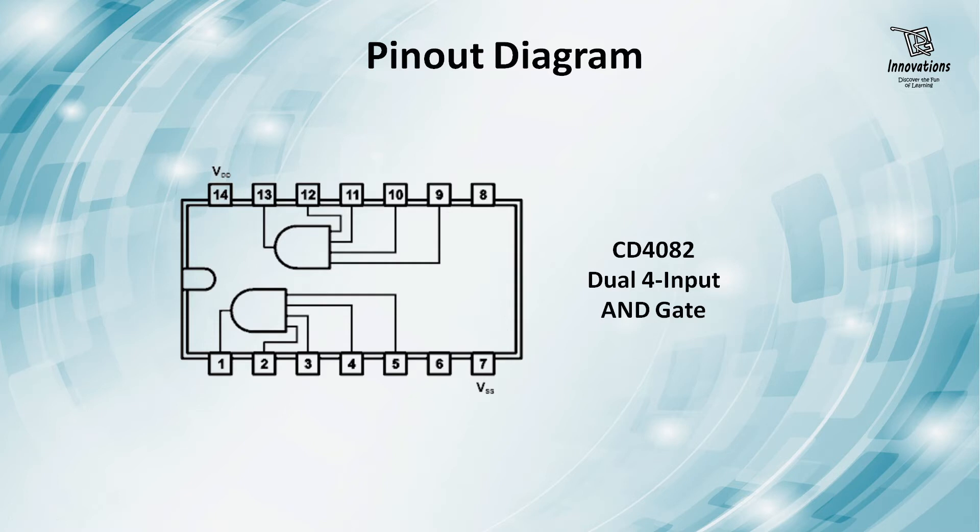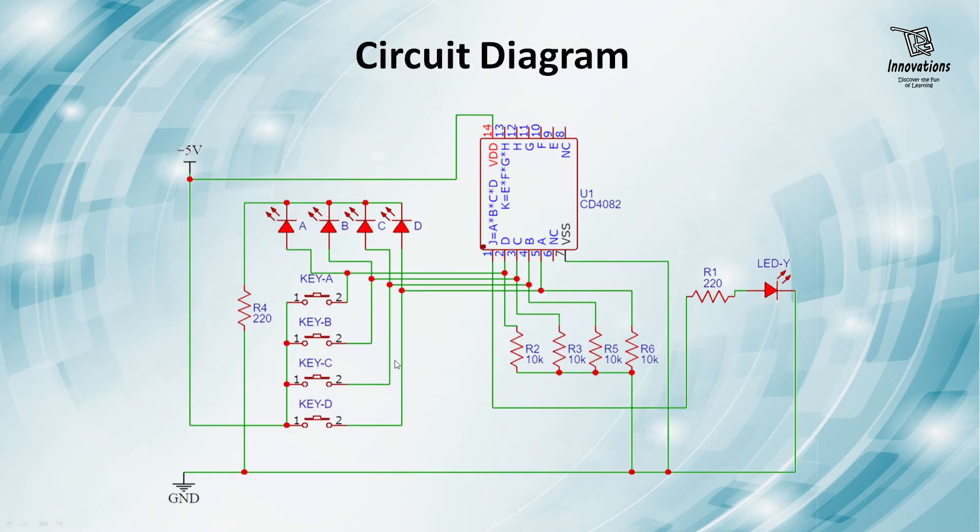So let us see the circuit diagram. This is the circuit diagram that we are going to implement where we are using the IC CD4082. And we will only see the first segment of the AND gate IC, where pin numbers 2, 3, 4, 5 are inputs and pin number 1 is output. So we are using four switches here: Switch A, Switch B, Switch C and Switch D.